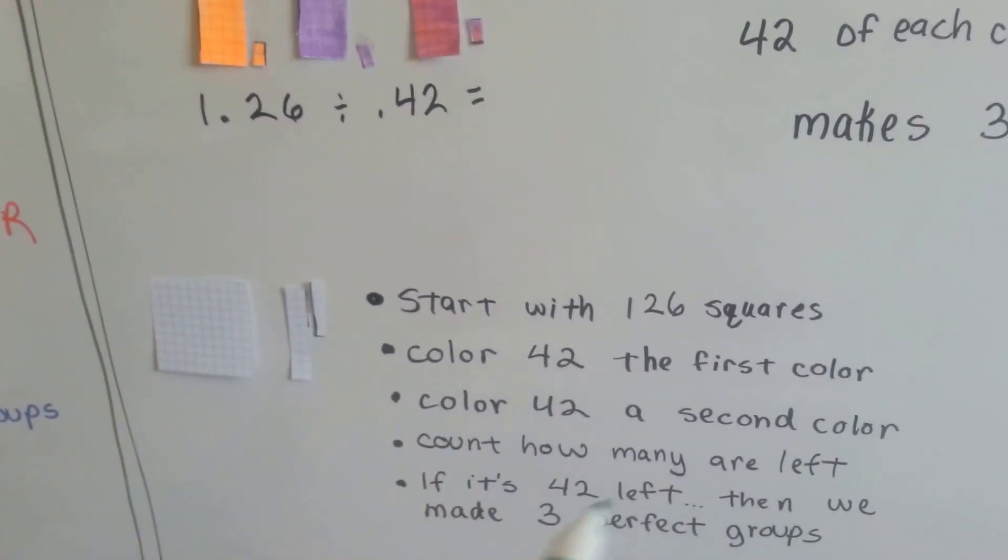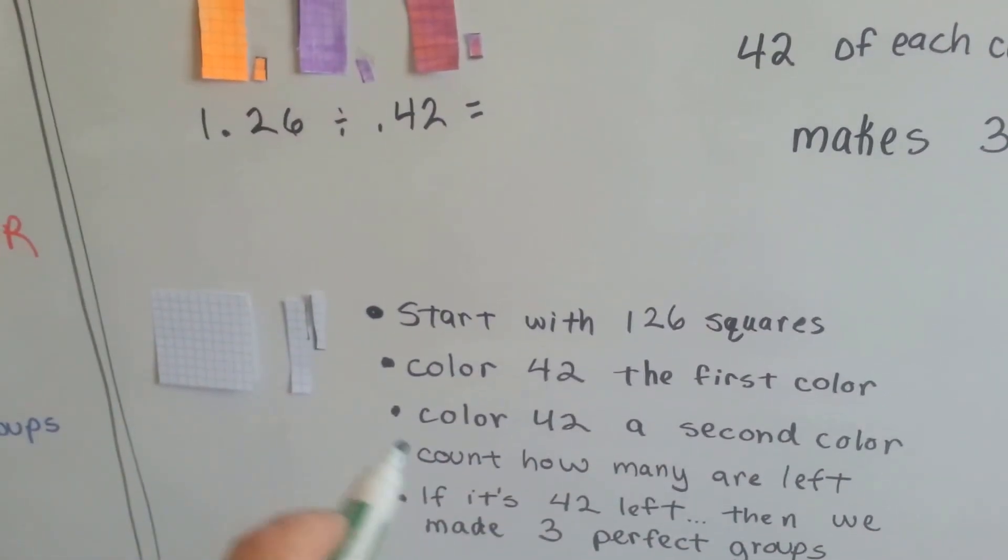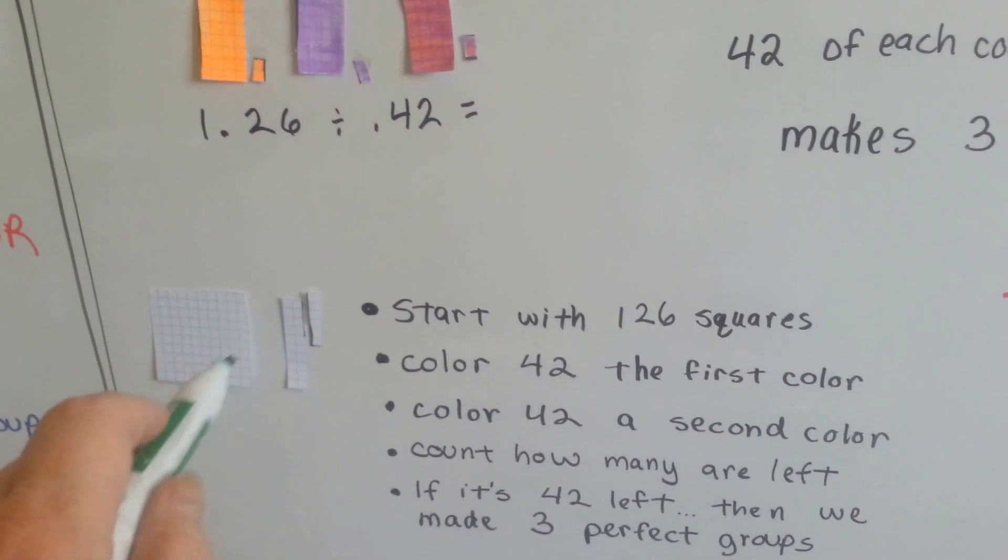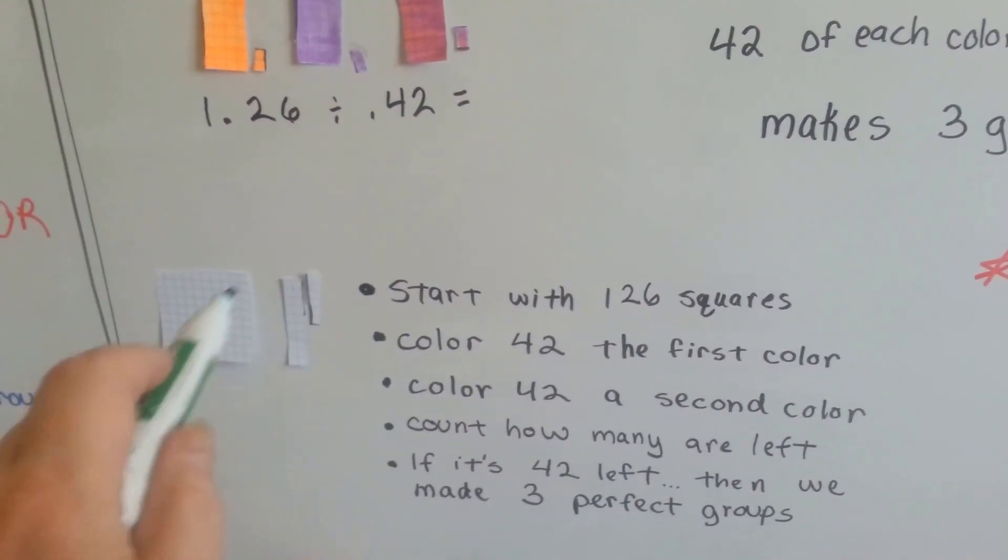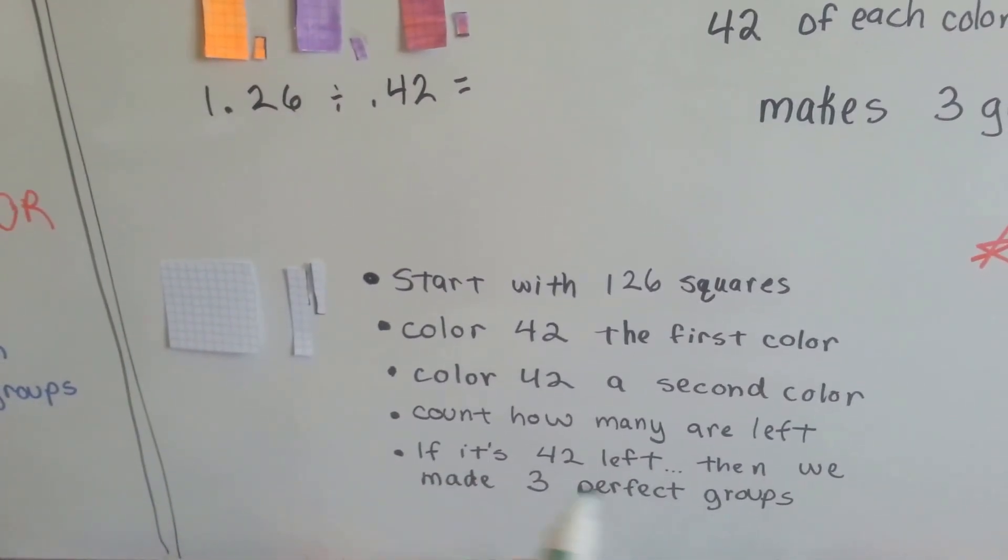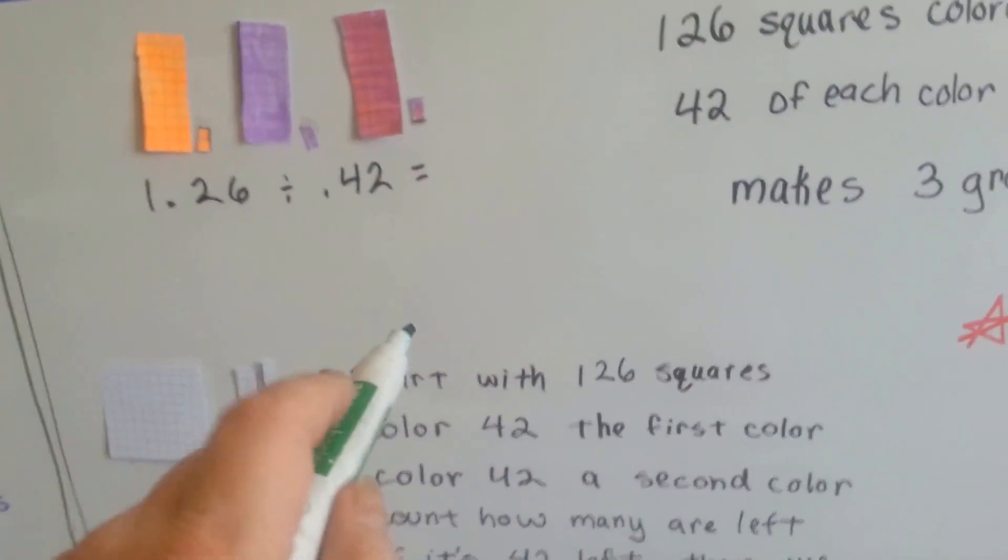Then I count how many are left that are still white that haven't been colored. And if there's 42 of them, then I know that we made three perfect groups of 42 hundredths, and that the answer is three.